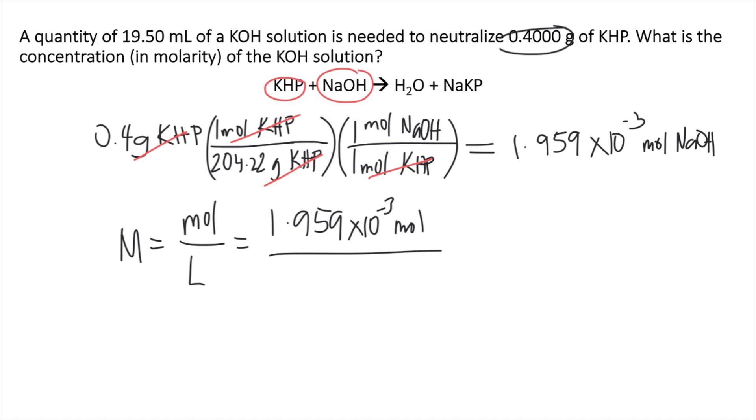The moles we got was 1.959 times 10 to the negative 3 moles, divided by the liters of solution. In the problem we are given 19.50 ml, so you need to convert that first to liters. 19.50 divided by 1,000 equals 0.0195 liters.